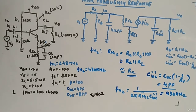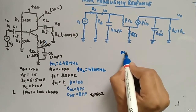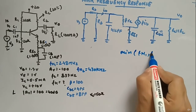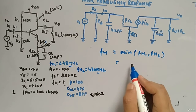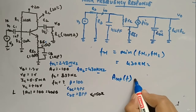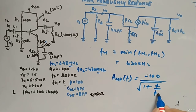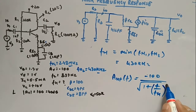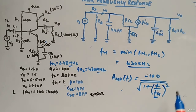Now we choose the dominant (minimum) cutoff: fH = min(fH1, fH2) = min(2.48 MHz, 430 kHz) = 430 kHz. The high-frequency response is: A(f) = −100 / √(1 + (f/fH)²). With this fH value and the midband gain, you can calculate the gain at any frequency.